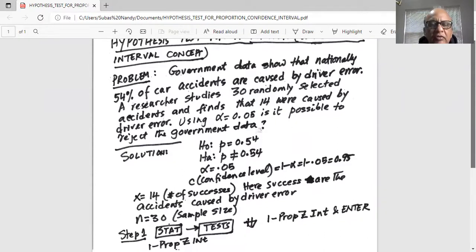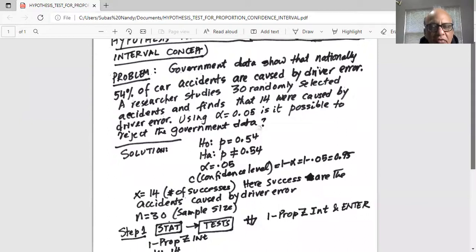In the problem, they have given us the level of significance as 0.05. Remember, level of significance is maximum probability of rejecting H0 when it is true.